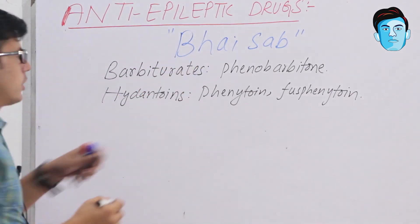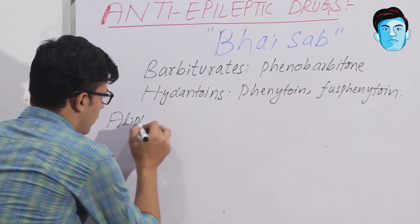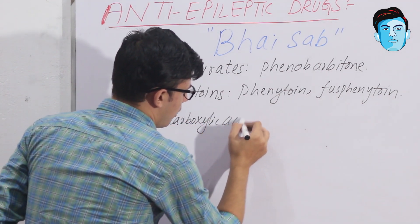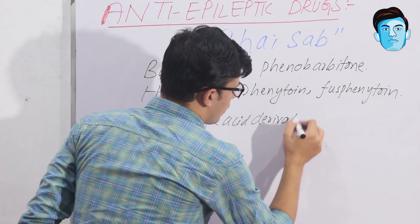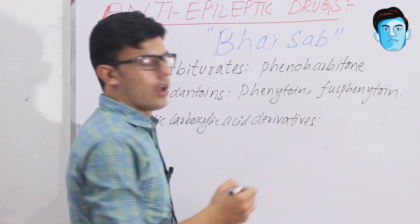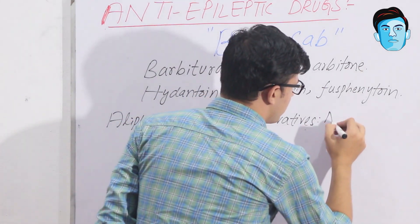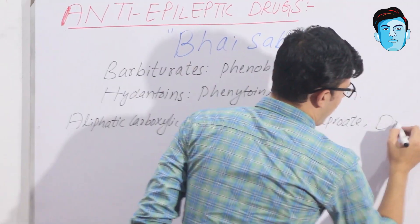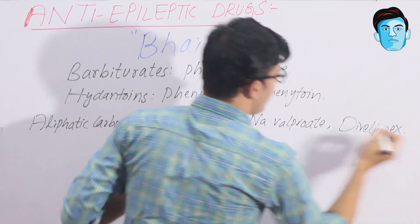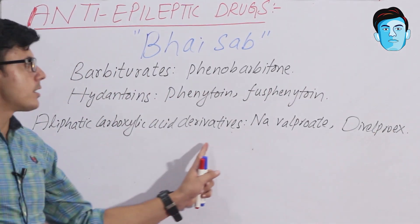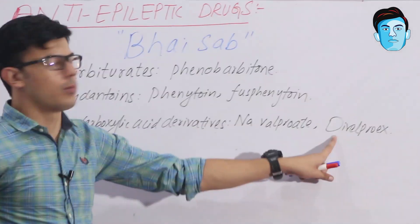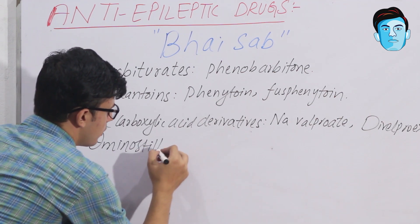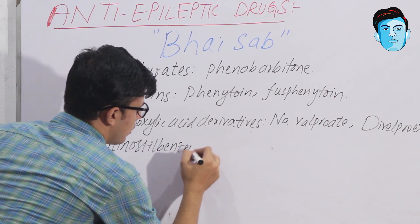A stands for the aliphatic carboxylic acid derivatives. In this class we have sodium valproate and divalproex. So aliphatic carboxylic acid derivatives contain sodium valproate and divalproex.